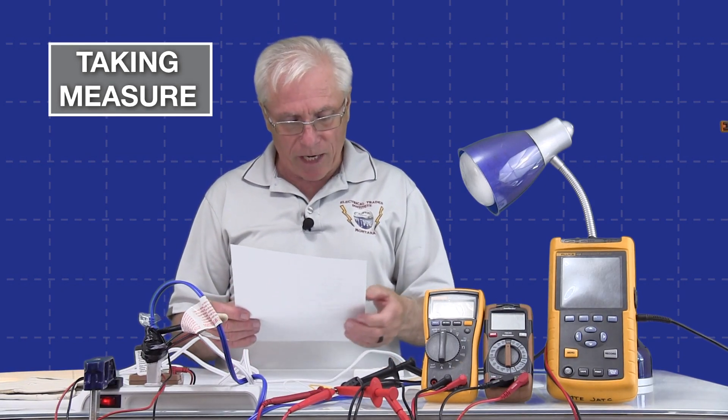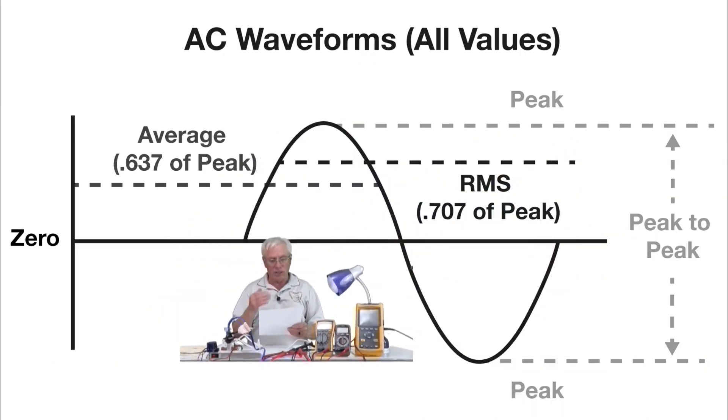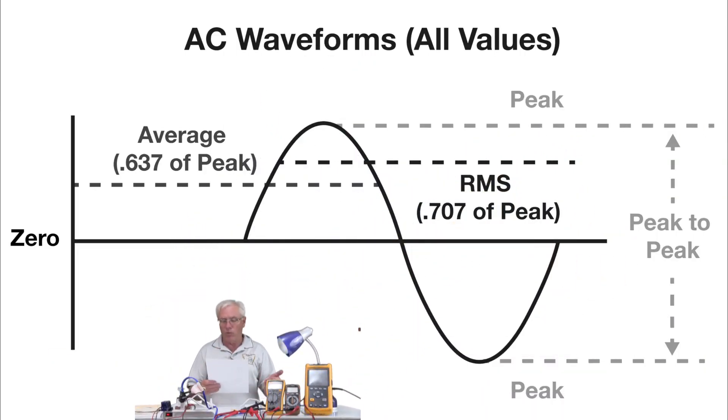On the screen now you should see the sine wave with a bunch of values on it, and that's what we want to talk about. Remember, the horizontal line represents time and also represents zero. The top alternation is positive, the bottom alternation is negative, and the wave amplitude—in other words the height—represents the value of whatever we're looking at, whether it be voltage or current.